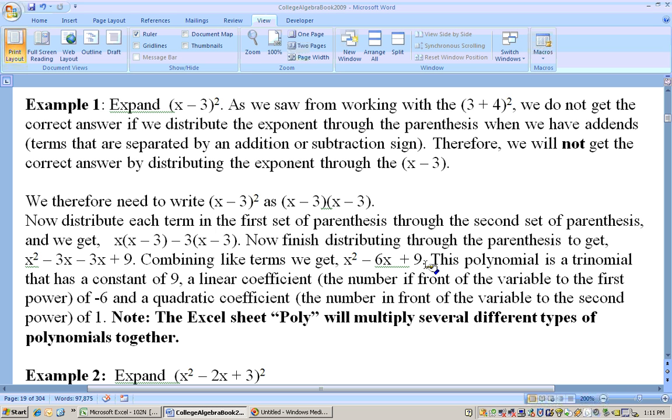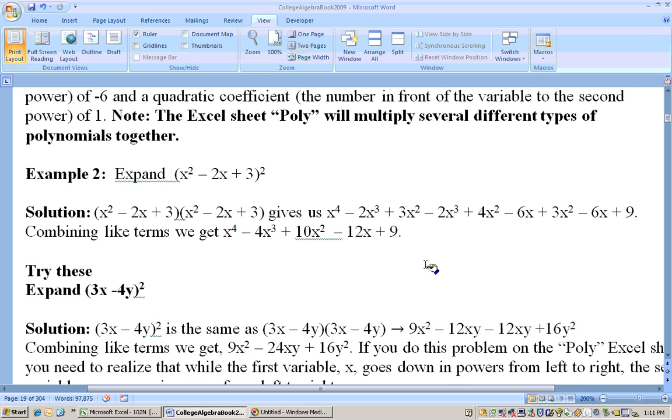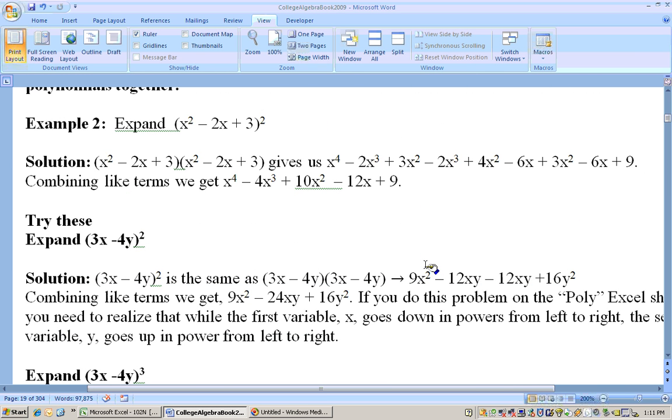Foil stands for first, outer, inner, last. But when you get up to bigger things like this, well, you just have to write it out. x squared minus 2x plus 3 squared means this whole thing times this whole thing. Multiply it times itself.